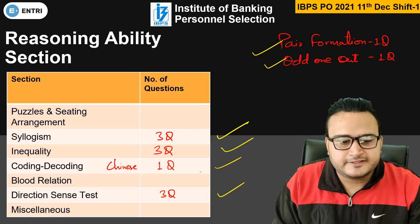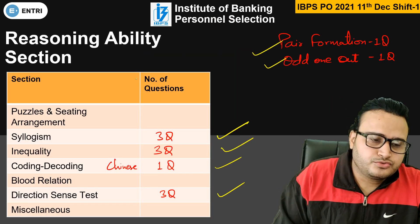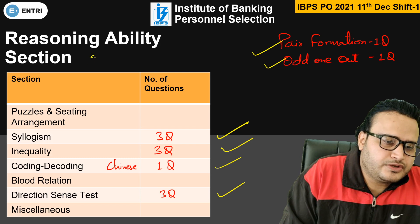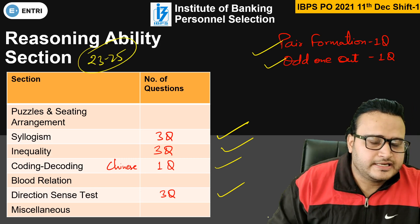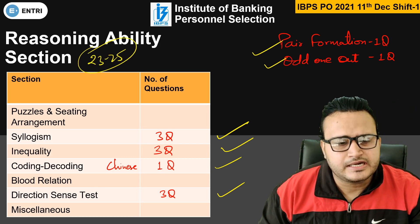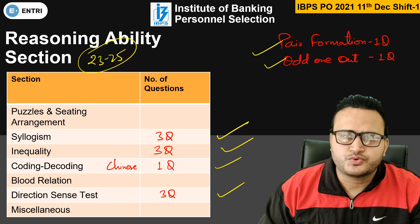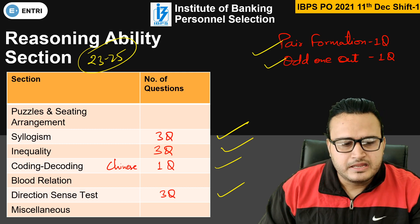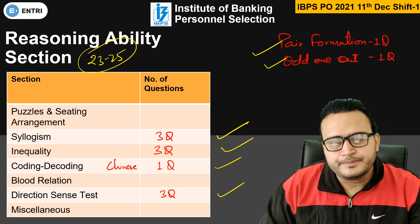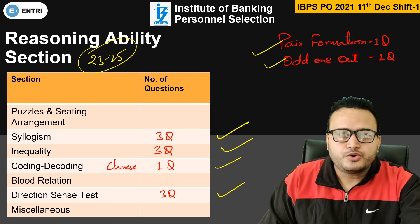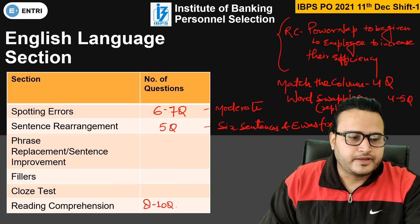Students are saying they could attempt only 22 to 25 questions, and sometimes students attempted 27 to 28 questions. But the excellent or average attempt, I have to say, was 23 to 25.